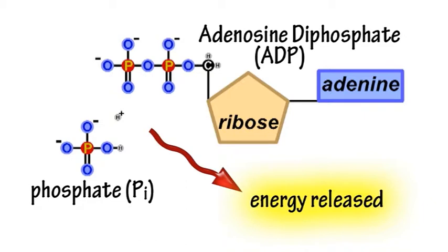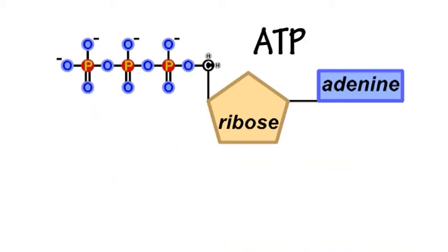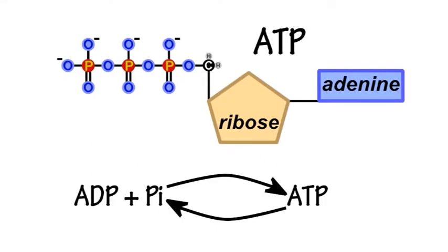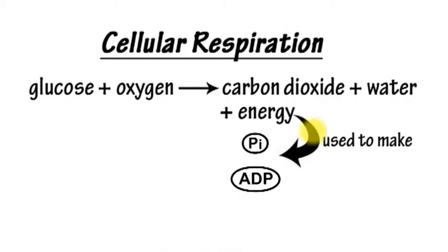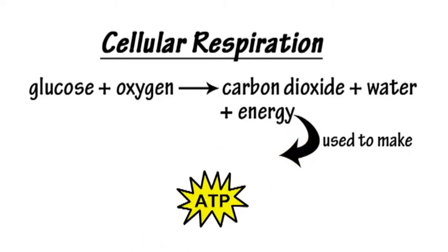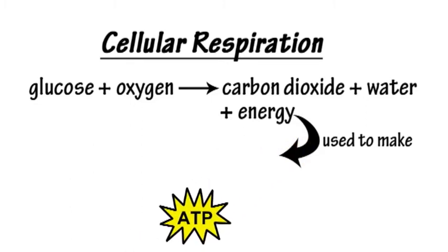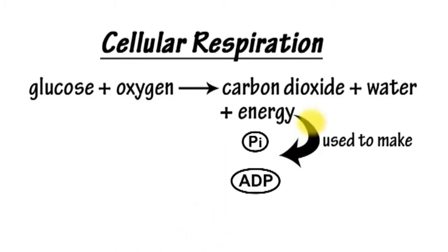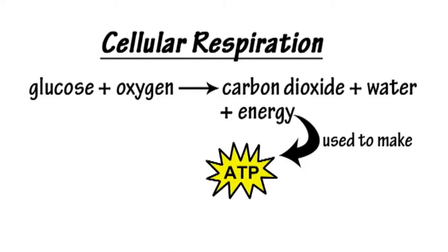ADP is recycled back into ATP by reattaching the phosphate group, so ATP can be reused again by the cell as a source of energy. However, energy is required to convert ADP and phosphate back into ATP. This energy to form molecules of ATP is provided by the processes of cellular respiration, which ultimately convert glucose and oxygen into carbon dioxide and water.